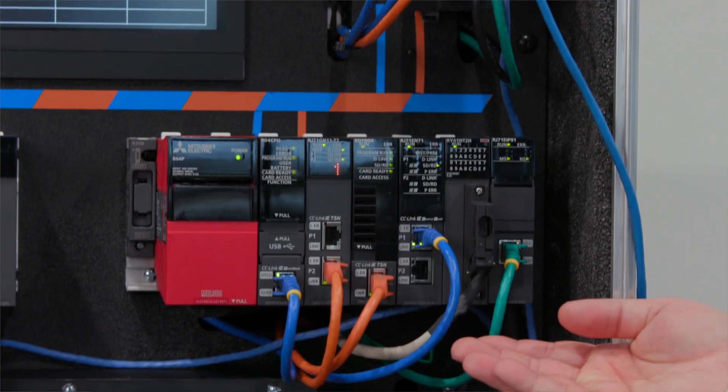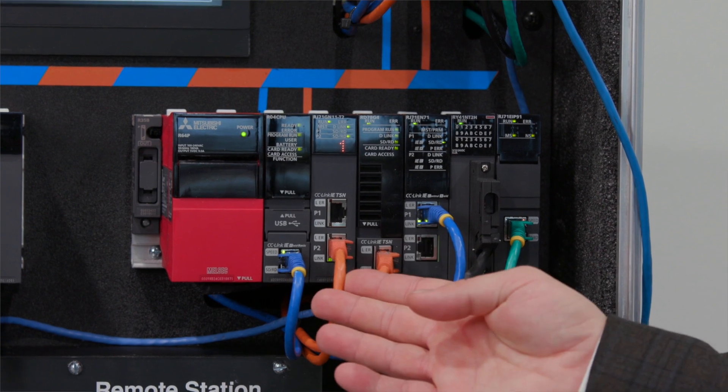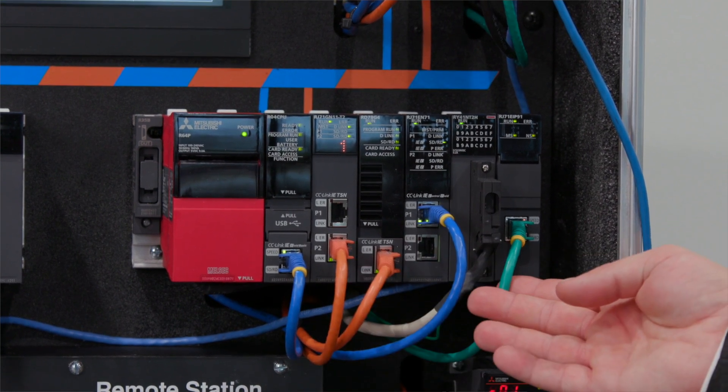It also has all the networks. So we have blue for Ethernet, the orange for IETSN and the green for Ethernet IP.